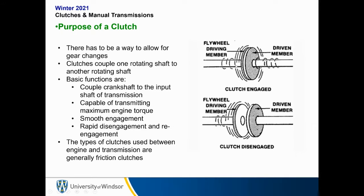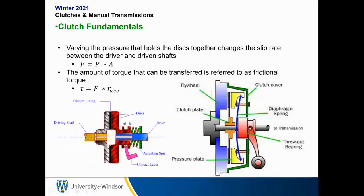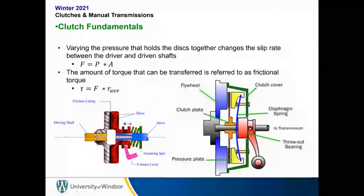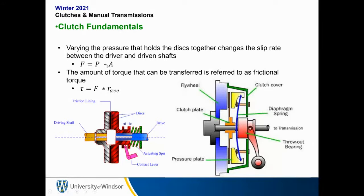When the clutch engages, the crankshaft of the engine has to spin at the same speed as your wheels. If your wheels aren't spinning the engine can't spin, therefore it stalls. The type of clutches used between engine and transmission are generally called friction clutches — they transmit torque between two rotating shafts by friction created between two disc surfaces. Force equals pressure times area, and the torque that can be transferred is the frictional torque: torque equals friction times the average radius.